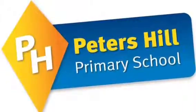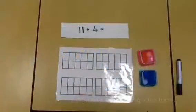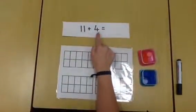Two digits adding one digit using a 10 frame. First, read the calculation: 11 add 4.